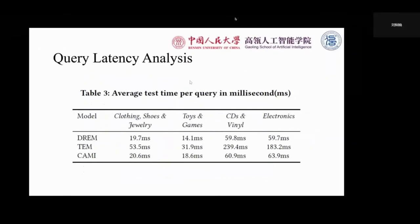Finally, we conduct query latency analysis of three models: DREM, TEM, and KAMI. We find that the average test time per query of DREM and KAMI is the same, and both are much faster than TEM, which verifies the efficiency of our model.